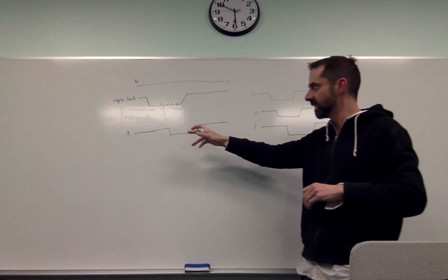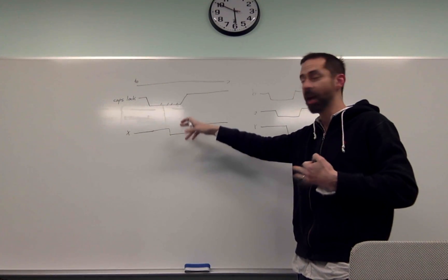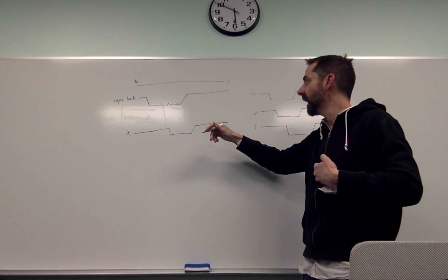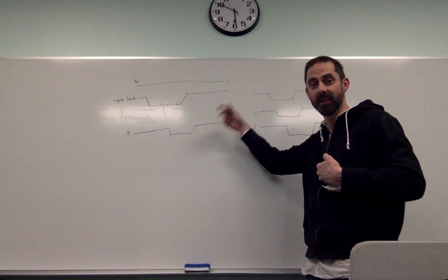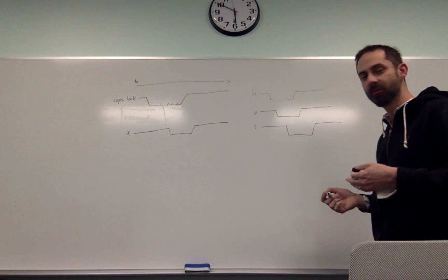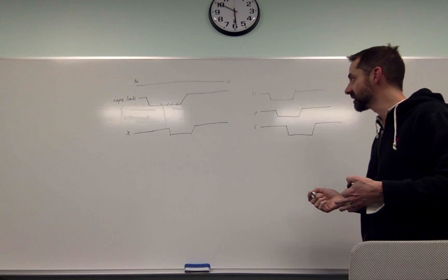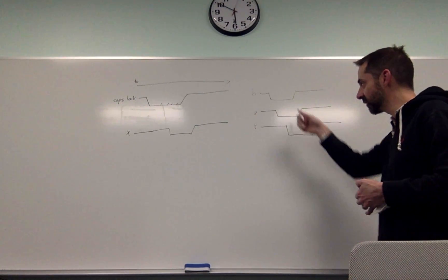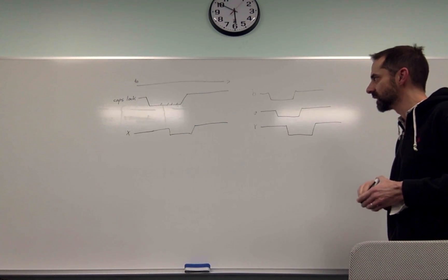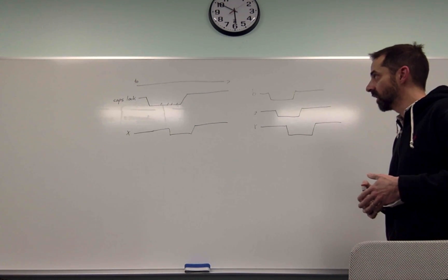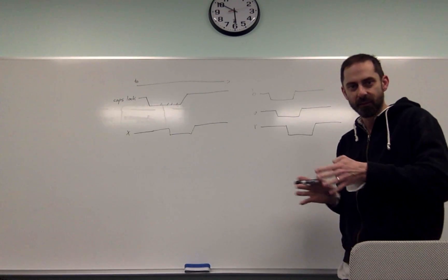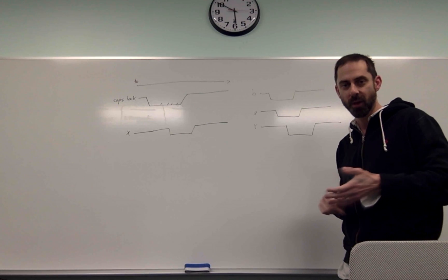They basically start - the key down happens after the modifier key down but before the modifier key up, and the modifier key up happens before the key up that accompanies the modifier. That is annoying to deal with because that case is totally indistinguishable from this case - they look exactly the same. So how does one solve this? I'm pleased to find that it is possible with just some careful tuning of thresholds to make it work and do pretty much what you want all the time.